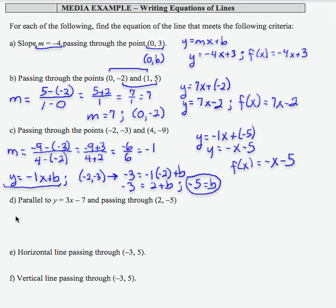Continuing with this example, Part D, I'm asked to write the equation of the line that's parallel to y equals 3x minus 7 and passes through (2, -5).